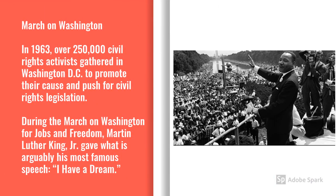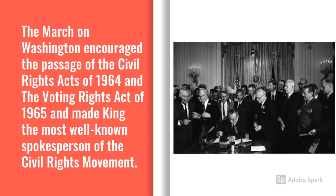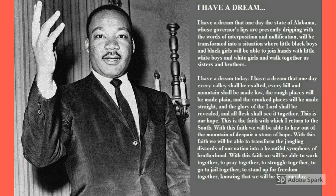In 1963, over 250,000 civil rights activists gathered in Washington, D.C. to promote their cause and push for civil rights legislation. During the March on Washington for Jobs and Freedom, Martin Luther King Jr. gave what is arguably his most famous speech, 'I Have a Dream.' The March on Washington encouraged the passage of the Civil Rights Act of 1964 and the Voting Rights Act of 1965, and made King the most well-known spokesperson of the civil rights movement. Throughout the 1960s, civil rights activists from the SNCC and SCLC continued to target Georgia.